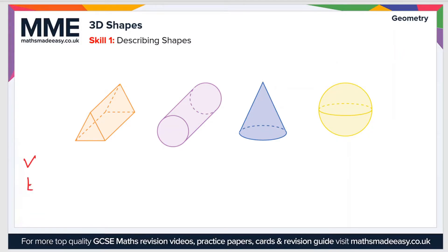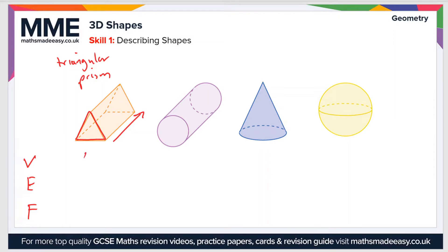I'll use V, E, F — vertices, edges, faces — for short. The first shape here is a triangular prism. A prism is like a 2D shape stretched outwards; the 2D shape is known as the cross section. In this case the cross section is a triangle, and a triangular prism has 6 vertices, 9 edges, and 5 faces.